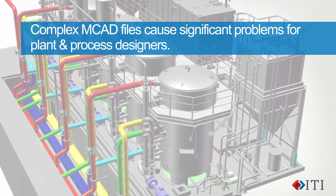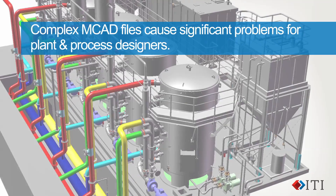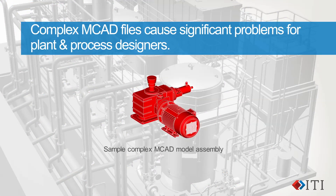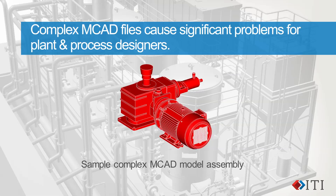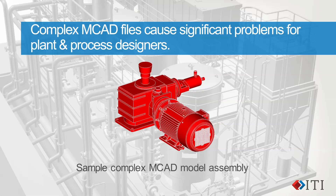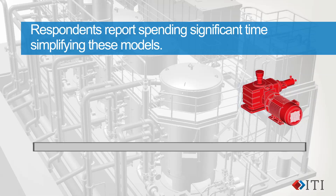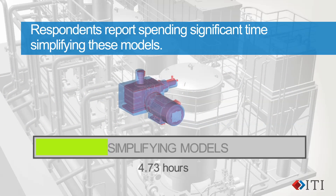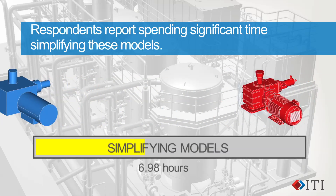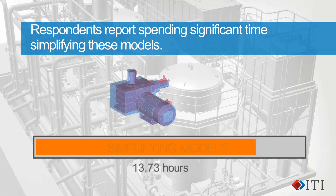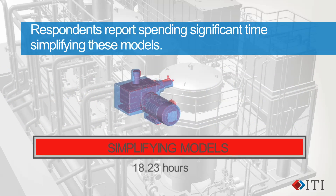Mechanical CAD models of machinery and equipment with their associated large geometry files cause serious problems for plant and process designers and frequently lead to project delays. A recent ITI survey found that 40% of respondents are spending one to three hours simplifying CAD models before integrating them with their plant layout model, and 36% were spending more than a day.